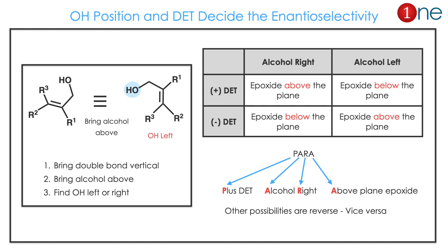The alcohol position is on the right. DET plus means the epoxide will form above the plane. If the alcohol is on the left, it forms below the plane. It will be vice versa for minus DET. Before getting to that, you have to always bring the alcohol above and the double bond vertical. Then you have to find whether OH is left or right.